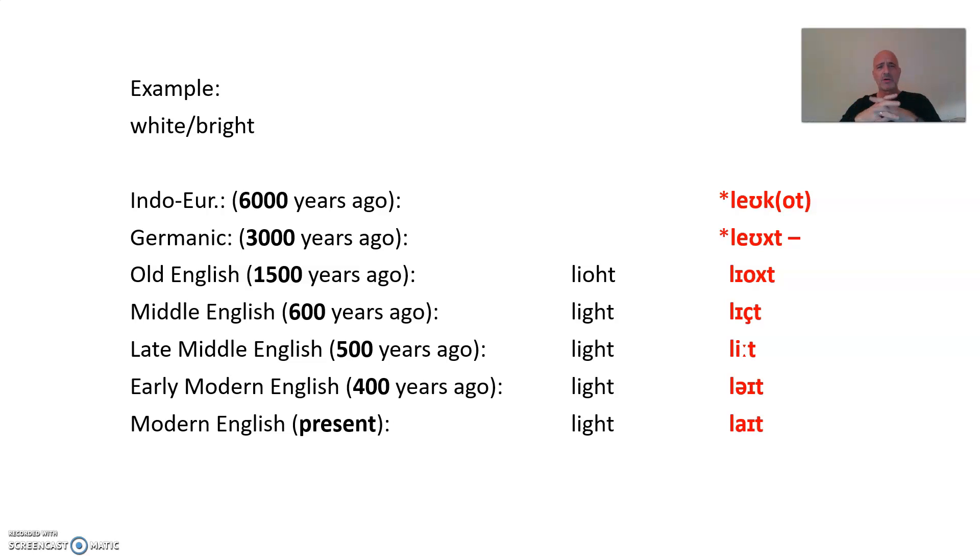Then approximately another 1,000 years or something like this, this leoht became licht. We're not quite sure whether licht or licht with this fricative here. Then 100 years later, this fricative was lost and the vowel sound was lengthened instead and became leet.